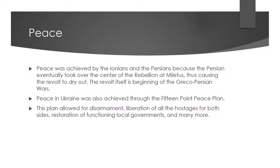Peace was needed by the Ionians because they would have been completely wiped out without it — the Persians are much bigger and better in every way. The same goes for Ukraine: Ukraine needed to reach a peace agreement with Russia and the pro-Russians, as Russia is a lot bigger and better than Ukraine in almost everything, being more militarily advanced and better trained.